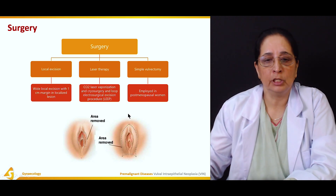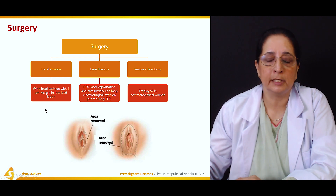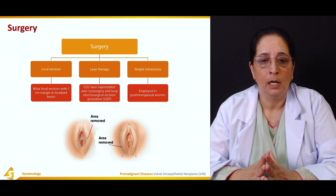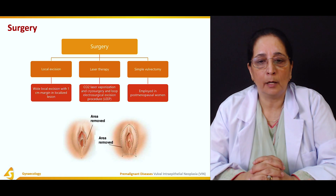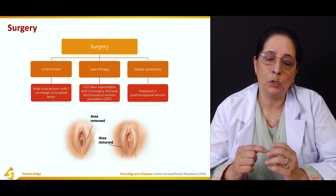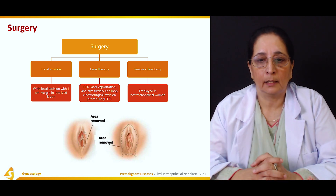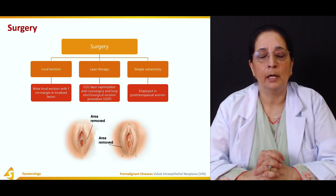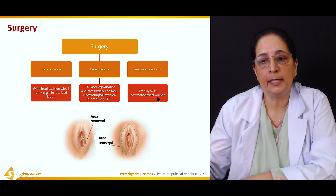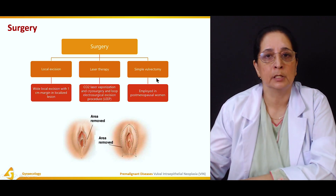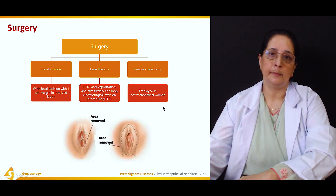Local excision is usually done with a one centimeter margin for small, localized lesions. Laser therapy uses carbon dioxide laser vaporization, cryosurgery, or loop electrosurgical excision procedure (LEEP), in which a small metal wire loop is inserted to remove or destroy the tissue. Simple vulvectomy is usually employed in post-menopausal women who have completed their family, as it is the preferred method of treatment in that group.